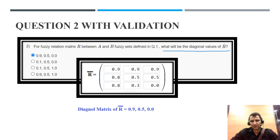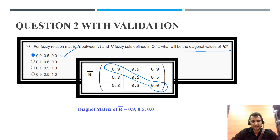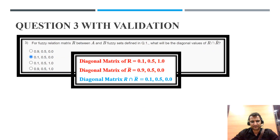Question 2: find the diagonal values of R complement. The diagonal values are 0.9, 0.5, and 0. Therefore, as per the given options, option B is the correct one.